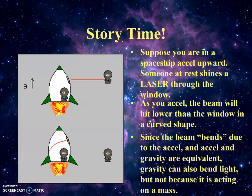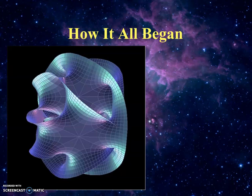Since the beam bends due to acceleration, and acceleration and gravity are equivalent to each other, gravity should also be able to bend light — and not because it's acting on mass. So acceleration can cause light to bend or appear to bend. And if gravity is just another form of acceleration, it should be able to do the same thing.